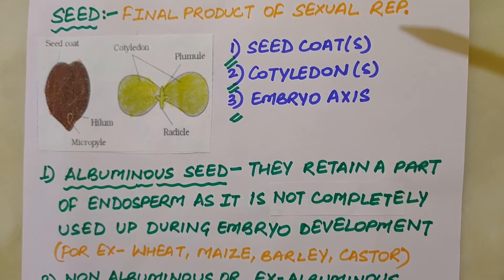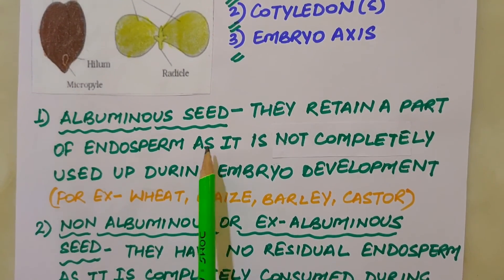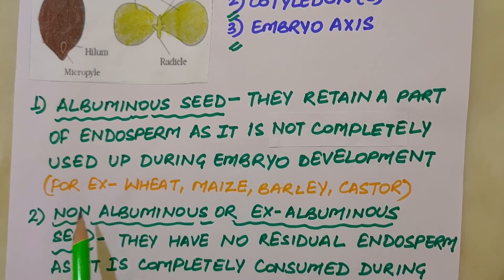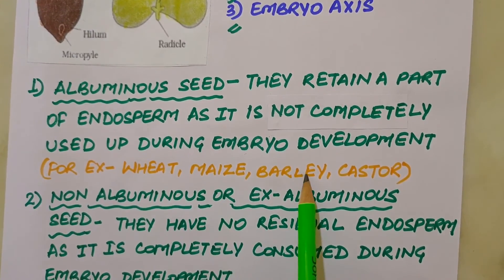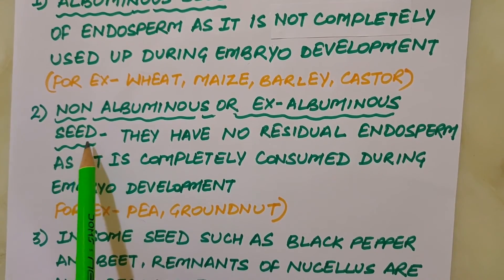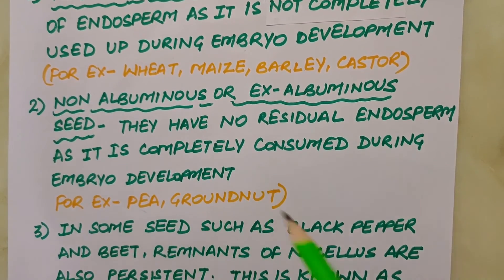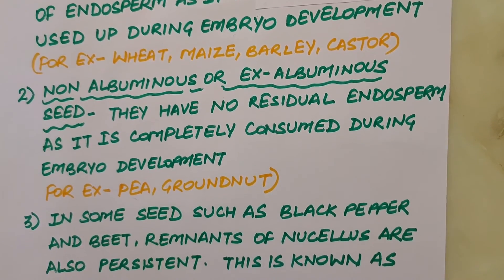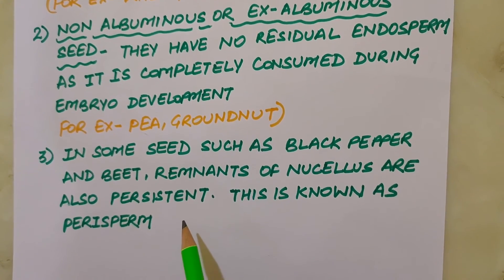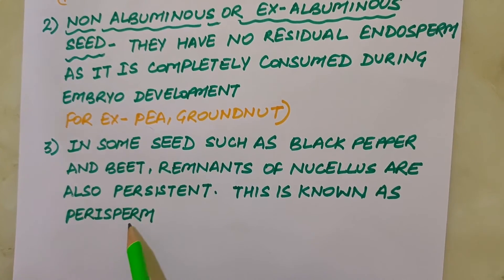Mature seeds may be non-albuminous (ex-albuminous) or albuminous. Albuminous seeds retain a part of endosperm as it is not completely used up during embryo development — examples are wheat, maize, barley and castor. Non-albuminous or ex-albuminous seeds have no residual endosperm as it is completely consumed during embryo development — examples are pea and groundnut. Occasionally in some seeds such as black pepper and beet, remnants of nucellus are also persistent, and this residual persistent nucellus is called the perisperm.